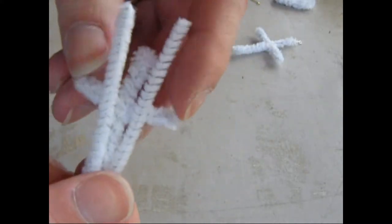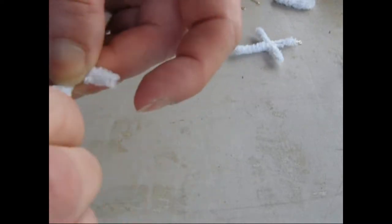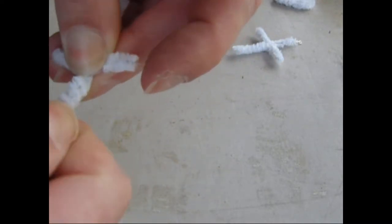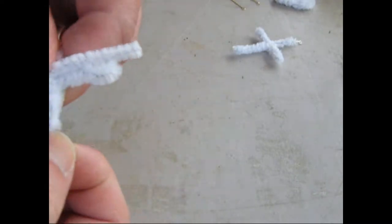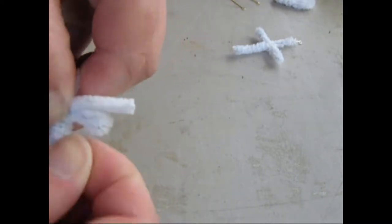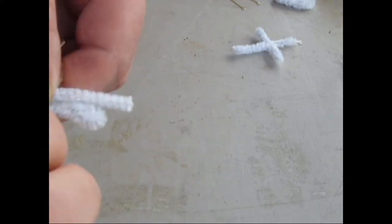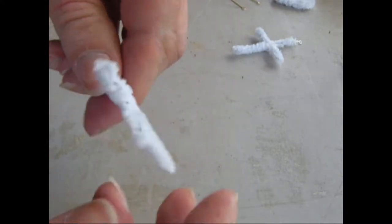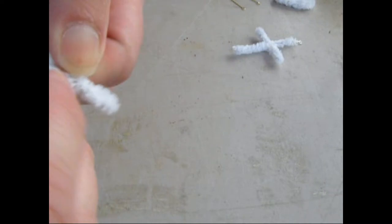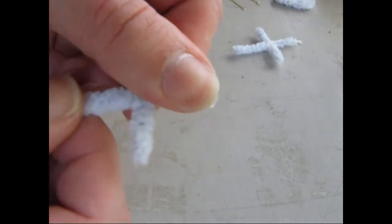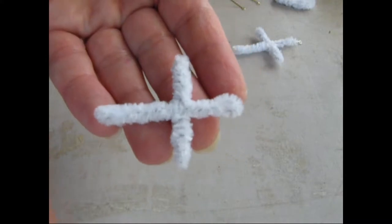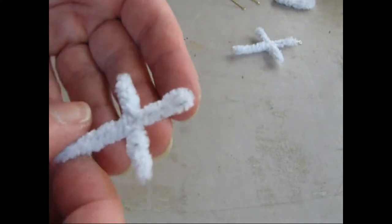Now just twist down the center of the cross. Now this is the bottom part of the cross. Just twist down until you got about the length you like for your cross and then fold up the ends. Now the cross is practically finished.